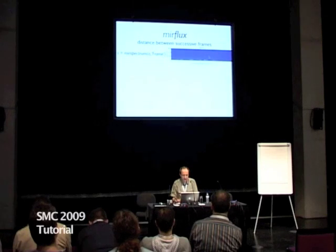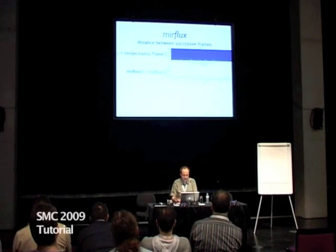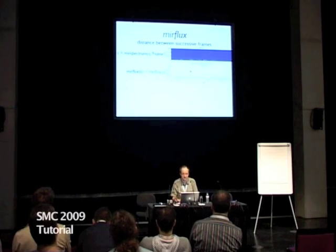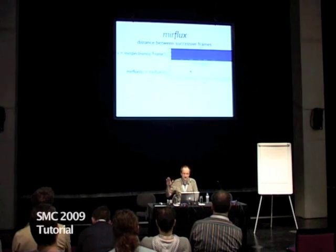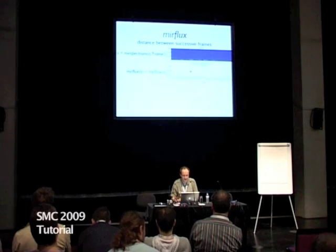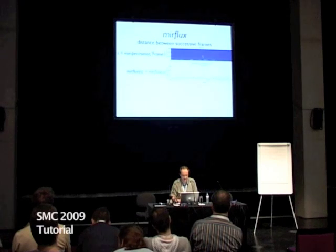From that we can compute the flux — the distance between successive frames. This shows clearly that we have some peaks where there is a high contrast between successive frames. So it can detect, for instance, a note onset, especially when you have a signal with a change of chords but not much change in general energy. Using this spectral flux, you can see this change in the spectrum.